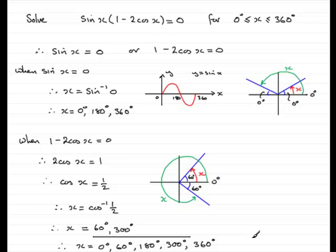OK, so if you get an equation that factorises and it equals 0, then you should be able to solve each of the individual equations in a manner similar to this. OK, so I hope that's been of some help.